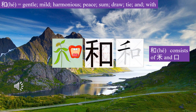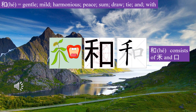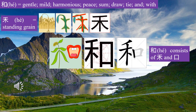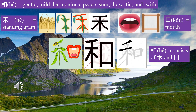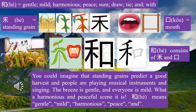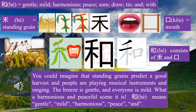Character 和 (Hé) consists of 禾 (Hé) and 口 (Kǒu). 禾 means a standing grain, 口 means mouth. You could imagine that standing grains predict a good harvest and people are playing musical instruments and singing. The breeze is gentle and everyone is mild — what a harmonious and peaceful scene. 和 means gentle, mild, harmonious, peace, and land.